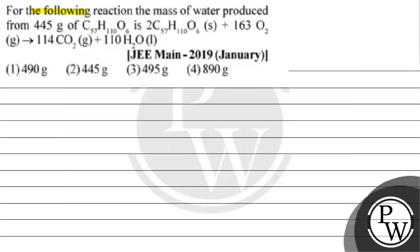Hello children, let's read this question. For the following reaction, the mass of water produced from 445 grams of C57H110O6 is — we have this reaction and we have to tell how much water will form. Option one: 490g, option two: 445g, option three: 495g, option four: 890g.